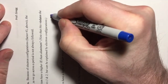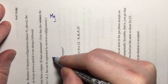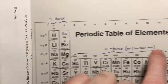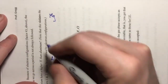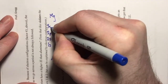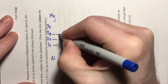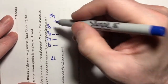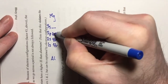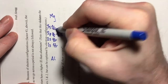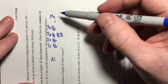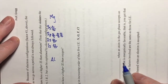Magnesium's electron configuration is 1s² 2s² 2p⁶ 3s², so let's fill up electrons all the way up to 3s². That is the electron diagram for magnesium.